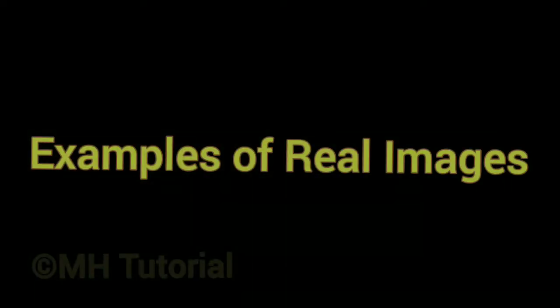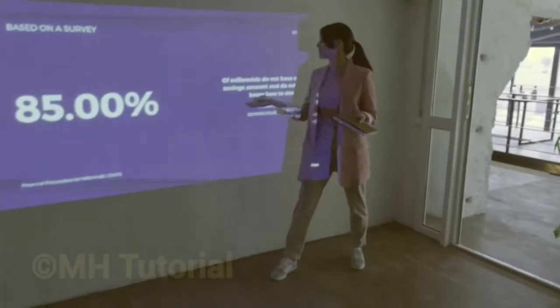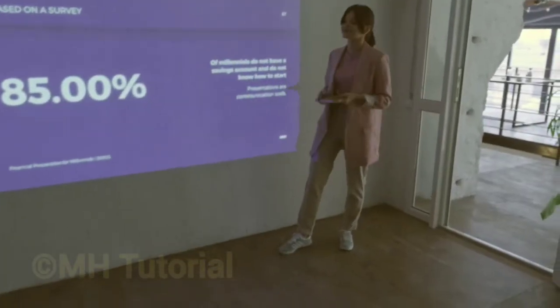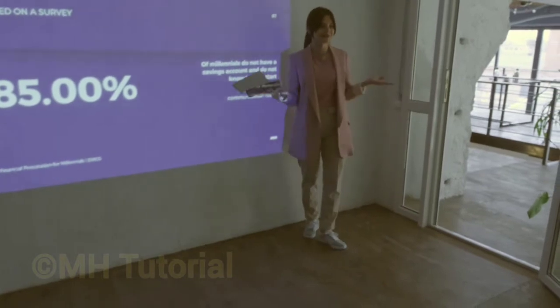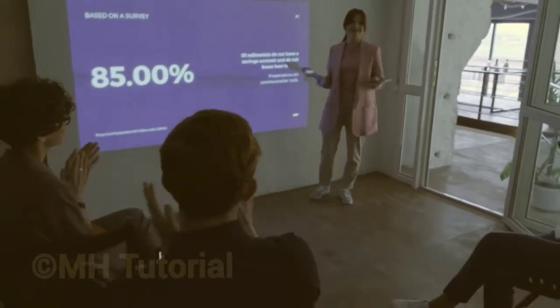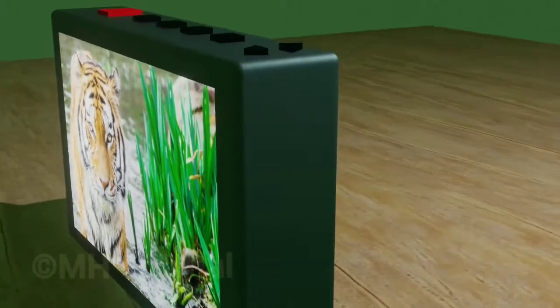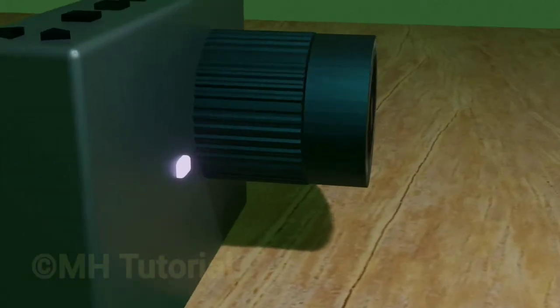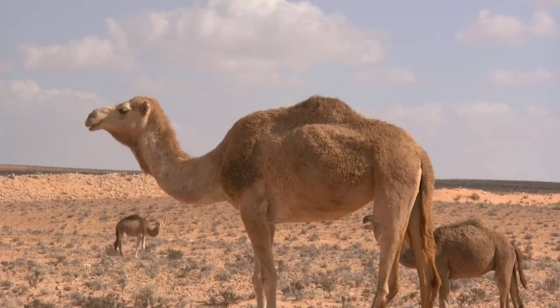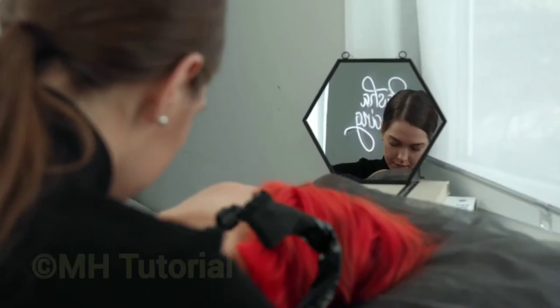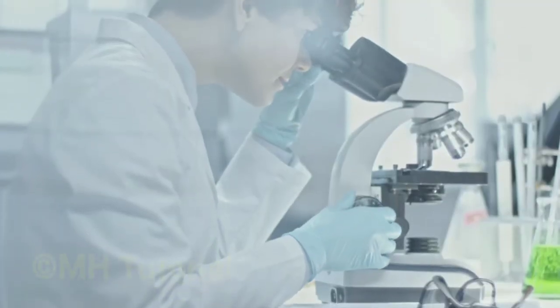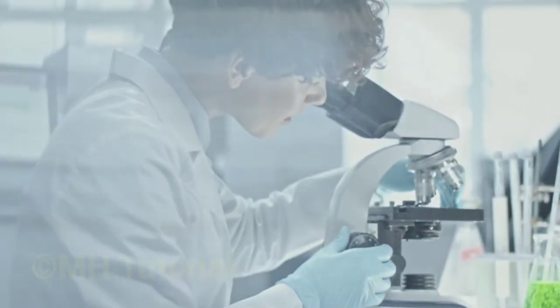Examples of real images are: screen images in a theater, pictures from a projector, and images formed inside a camera, and so on. Examples of virtual images are: a mirage in a desert, your reflection on a mirror, and images formed inside a microscope, and so on.